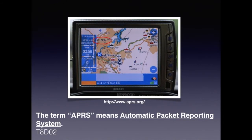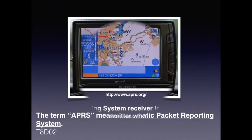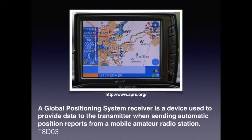A relative newcomer to amateur radio is APRS. For the exam, you need to know that the term APRS means Automatic Packet Reporting System. When you use GPS in conjunction with APRS, you can get real-time information, which is especially useful in emergencies — sending data to a central office or emergency management center. For the exam, you need to know that a global positioning system receiver is a device used to provide data to the transmitter when sending automatic position reports from a mobile amateur radio station.